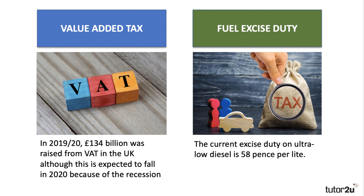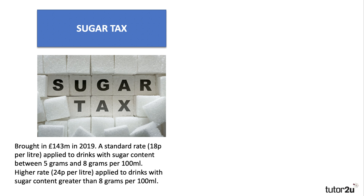Another example of an indirect tax is fuel duty — an excise duty. When you fill up at the petrol station, you're basically putting money into the government's coffers. The current excise duty on a litre of ultra-low diesel is 58 pence per litre, which is probably around 50–60% of the retail price of a litre of fuel.